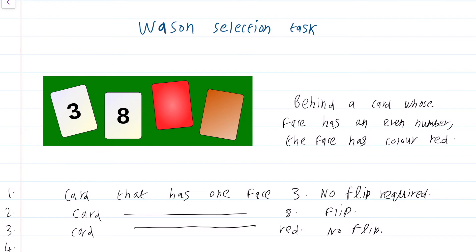What about the fourth one? Fourth one, card that has one face brown, a flip is required. Why is a flip required? Because if the opposite side is odd, then it is not a problem. But the opposite face, if it is actually an even number, then this particular last card is going to be violating the proposition that behind a card whose face has an even number, the face has color red. This would be violated.